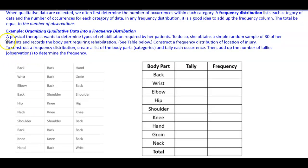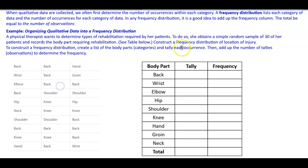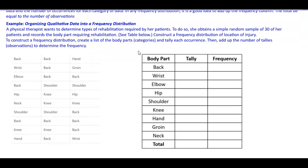For this example, we want to organize qualitative data into a frequency distribution. A physical therapist wants to determine the types of rehabilitation required by her patients. She obtains a simple random sample of 30 patients and records the body part requiring rehabilitation, as shown in the table below. We're going to construct a frequency distribution of location of injury.